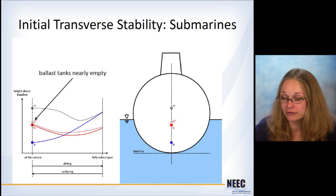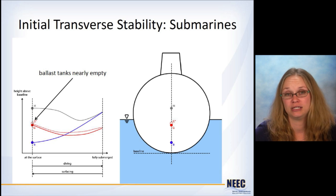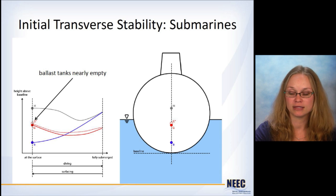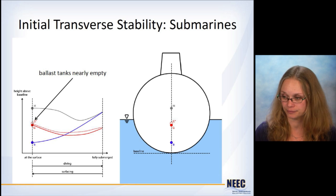To illustrate how these values are changing, especially with GM, as the submarine goes from the surface down through diving and into fully submerged, I put together a few slides here. So in the beginning, this is at the surface. You've got center of buoyancy, center of gravity. The ballast tanks are nearly empty.